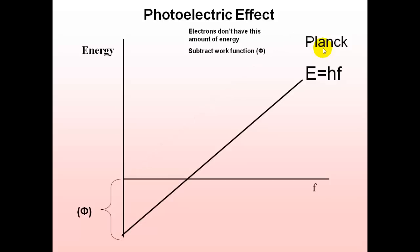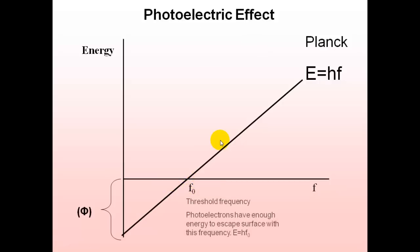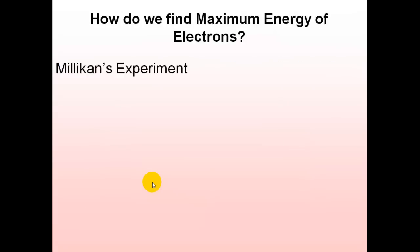This gives us the energy of the electrons: E = hF minus the work function. F₀ is the threshold frequency, above which electrons are emitted. Below this frequency, no electrons are emitted because the energy is not enough to overcome the work function. At the threshold frequency, photoelectrons have just enough energy to escape the surface.